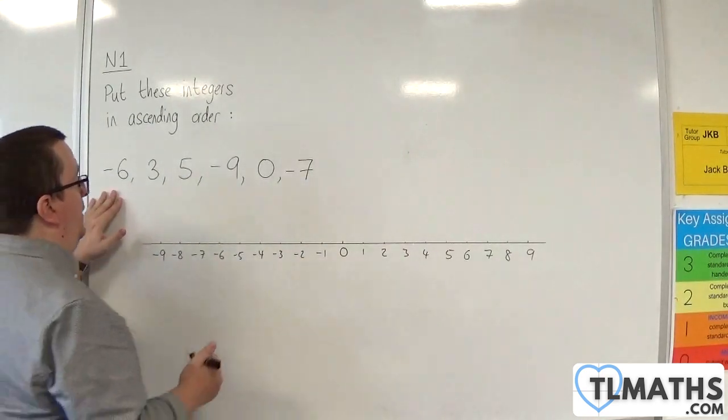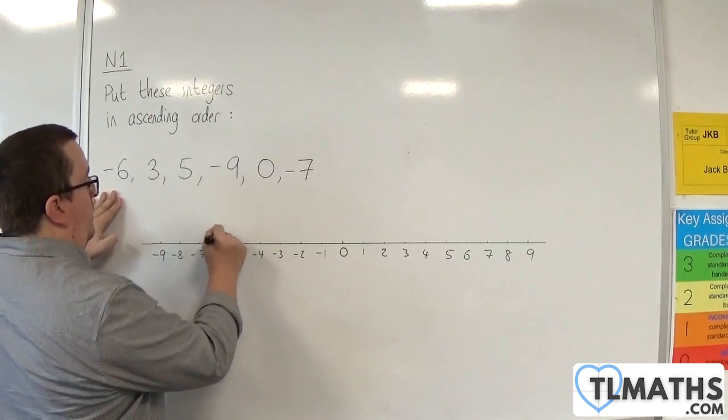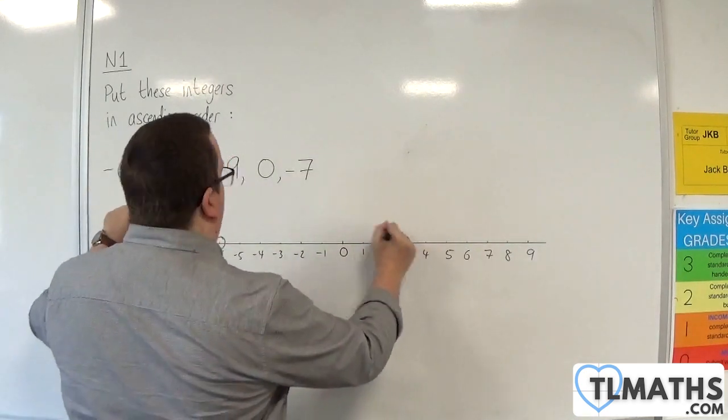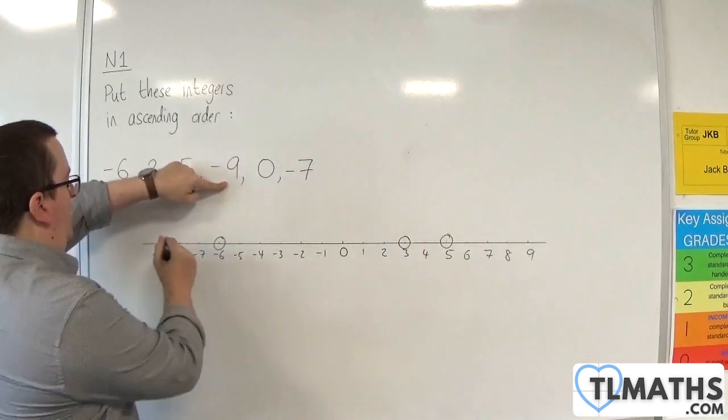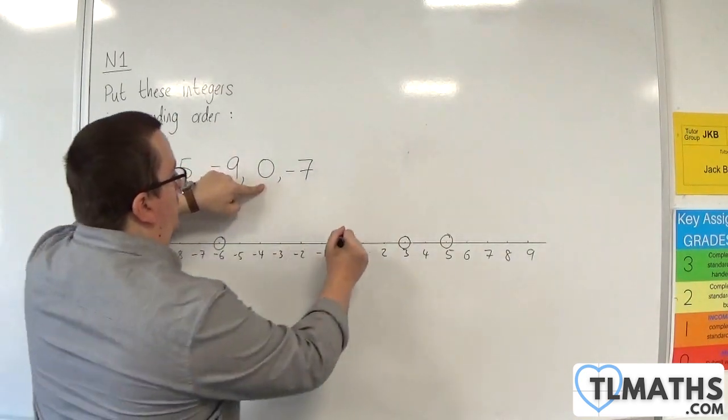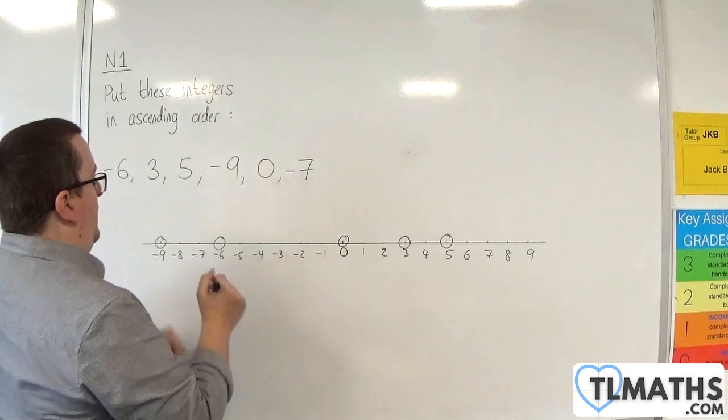Minus 6 is going to come first, so let's just circle what we've got. There's minus 6, we've got 3, we've got 5, we've got minus 9, we've got 0, and we've got minus 7.